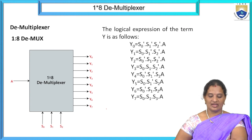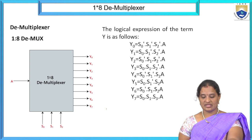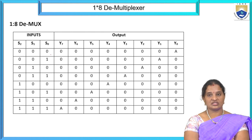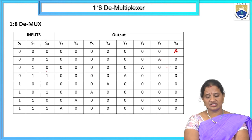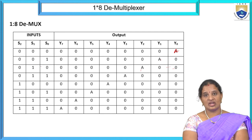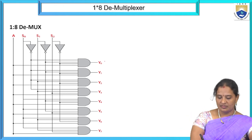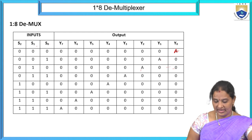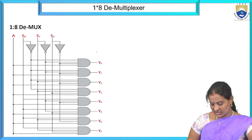The 1 by 8 DEMUX has 3 selection inputs (S0, S1, S2), 1 data input A, and 8 outputs. The truth table has 8 rows. When all selection inputs are 0, Y0 = A; when S2S1S0 = 001, Y1 = A; when S2S1S0 = 010, Y2 = A; and so on. The logic circuit has 8 AND gates (4 inputs each), inverters for each selection input to generate complements (S0, S0', S1, S1', S2, S2'), and the data input A connected to all AND gates.